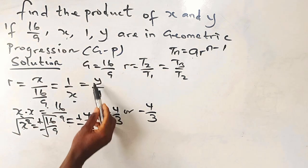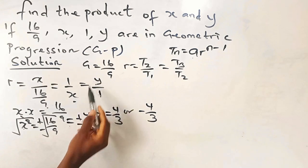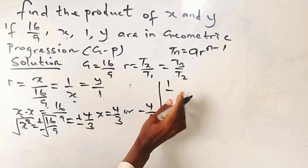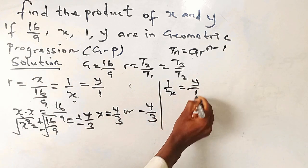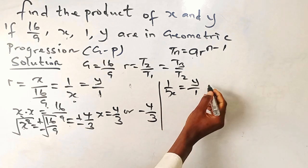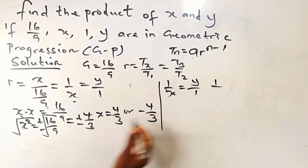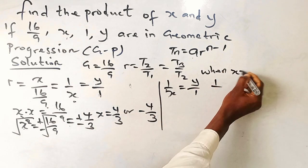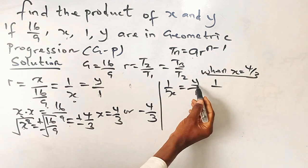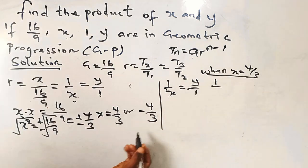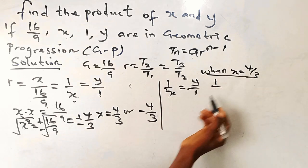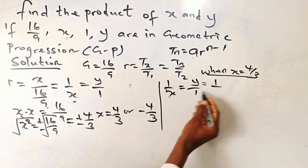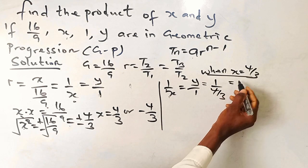To determine y, we compare the second and third ratios: 1 over x equals y over 1. When x equals 4 over 3, we substitute back, giving 1 over (4 over 3) equals y.